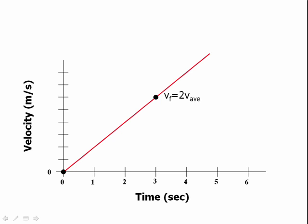That means that the average velocity, which is halfway between zero and twice the average, is going to occur right there, at exactly one and a half seconds into the journey.